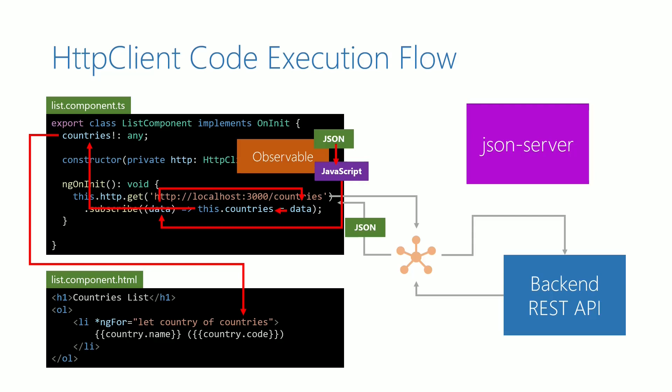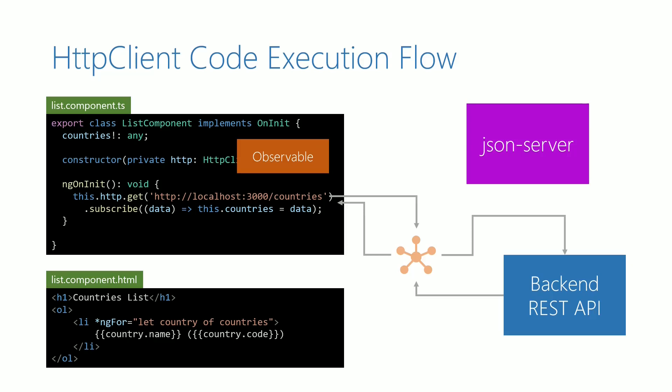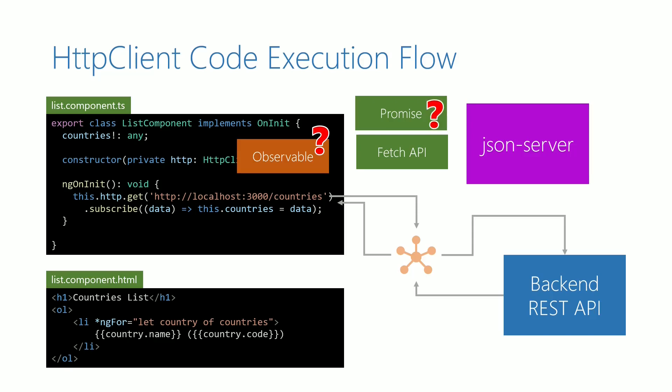The explanation provided in this video may give rise to more questions. What is the purpose of using observable? JavaScript already supports asynchronous behavior using promises, which can be implemented using the Fetch API — so why is promise not used by HTTP client? How does HTTP client make the backend call, and under the hood, how does the transfer of data happen between HTTP client and backend? We will get answers to all these questions in the subsequent videos.